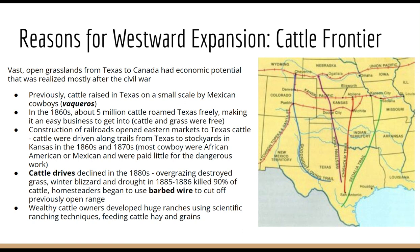Wealthy cattle owners started to realize the future was in developing huge ranches. We see the development of massive ranches beginning in the 1880s that used scientific ranching techniques — they fed cattle hay and grains and higher-calorie feed, kept them in one place, and fattened them up before taking them to the stockyard. So these massive cattle drives really declined in the 1880s.